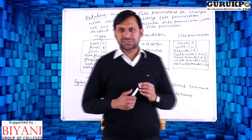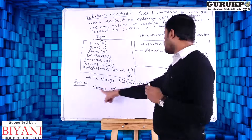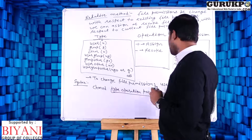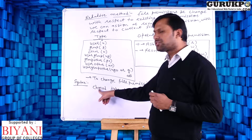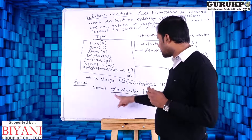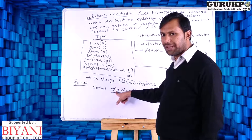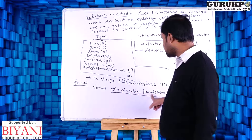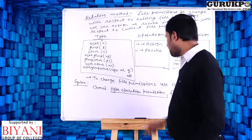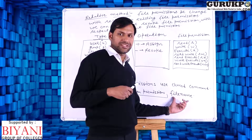To change file permissions we use the chmod command — it means change mode, i.e., change file permissions. The syntax is: first we place the type of user, then the operation, then the permission, and then the file name.